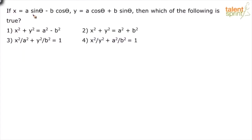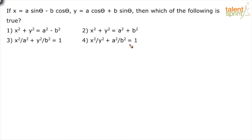If x equals a·sinθ minus b·cosθ and y equals a·cosθ plus b·sinθ, then which of the following is true? Option 1: x² + y² = a² - b². Option 2: x² + y² = a² + b². Option 3: x²/a² + y²/b² = 1. Option 4: x²/y² + a²/b² = 1.